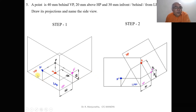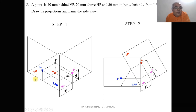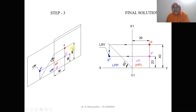Since we are looking from the left side to draw this profile view, it is naturally the left-side view. That is why it is written as LSV — because behind LPP is visible only when you look from the left-side view. This is how we analyze the projections of points in the second quadrant in two dimensions.